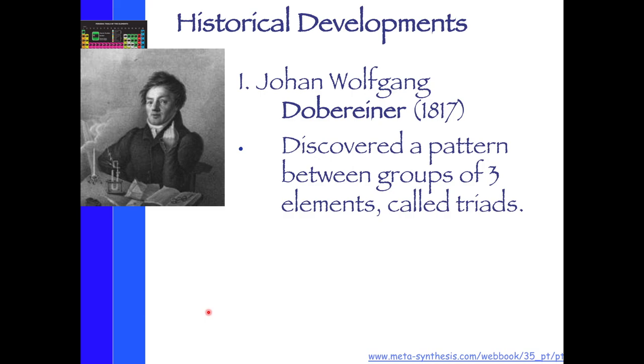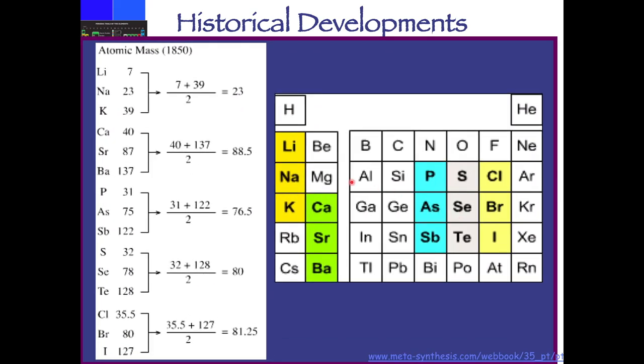The first person we'll talk about is Doberiner, Johann Wolfgang Doberiner. And he started to group elements together in groups of three, and we call them triads. So what he noticed was a repeating pattern of groups of three. When you would find their atomic masses, you could find a numerical value to find their average in between. So he noticed that there was a similar pattern between their masses. And so he came up with the rule of triads.